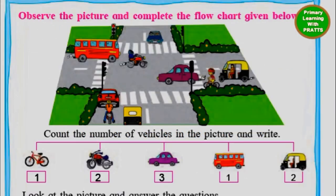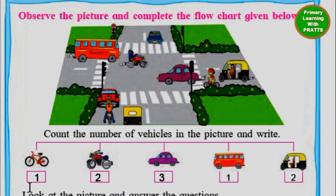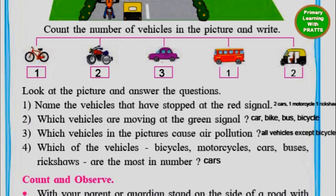Now observe the picture and complete the flow chart given below. Remember, all of this comes under the maths concept of data interpretation. Count the number of vehicles in the picture: we have one cycle, two motorcycles, three cars, one bus, and two auto rickshaws.